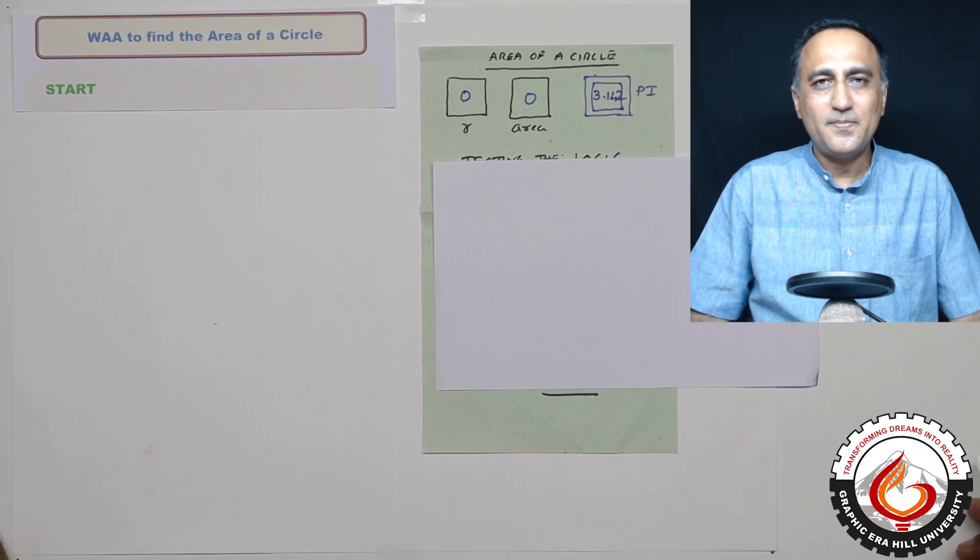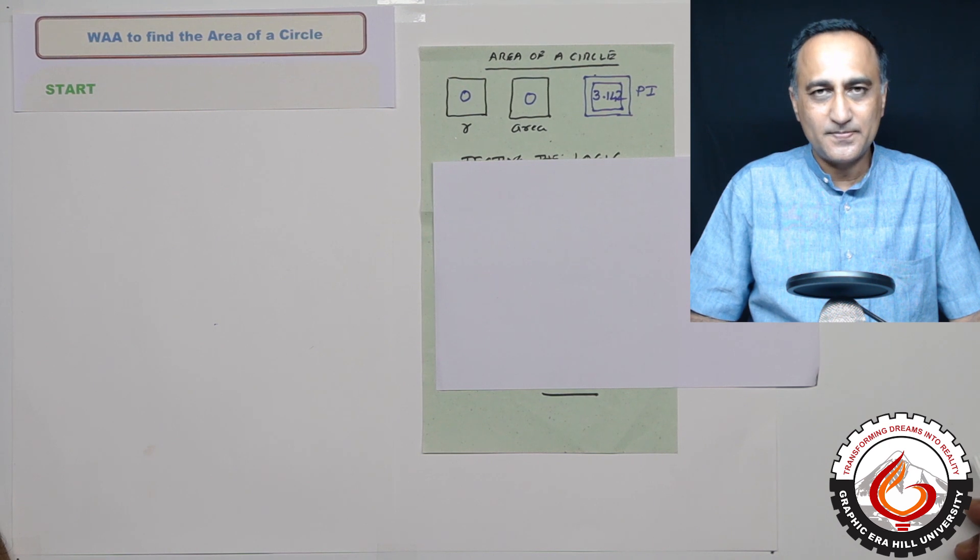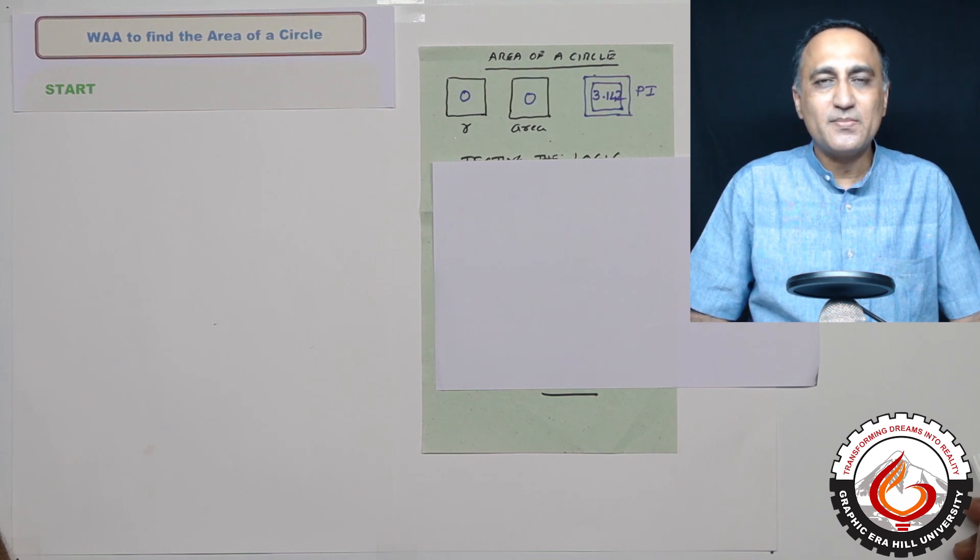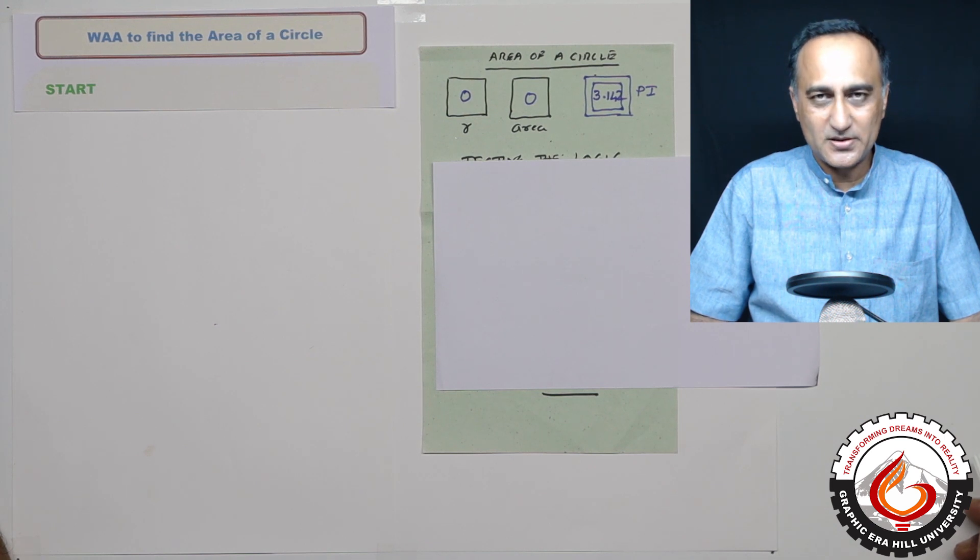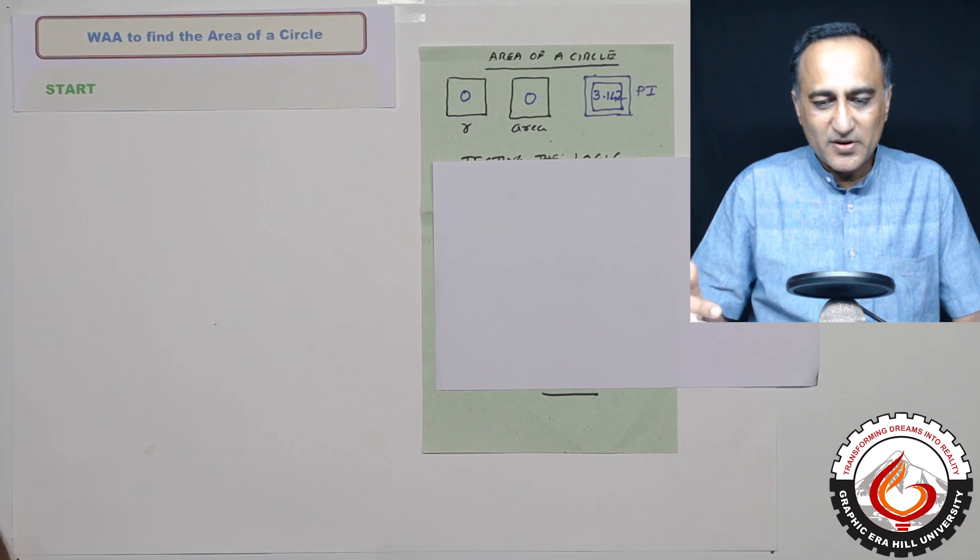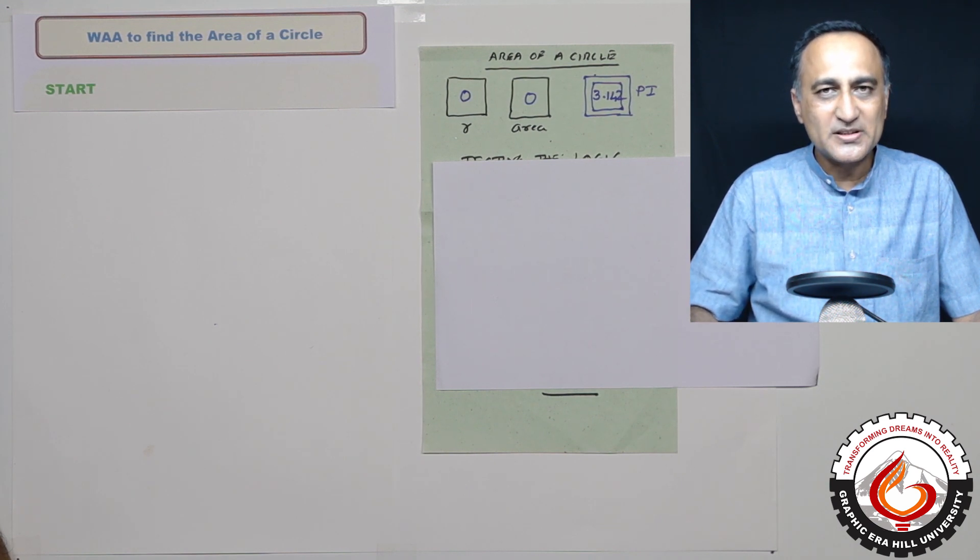We shall now take a look at an algorithm where we are going to calculate the area of a circle. The area of a circle is given by the formula pi into radius into radius. So the first thing is, whenever you're trying to solve a problem using an algorithmic approach, you need to identify what are the variables and constants.